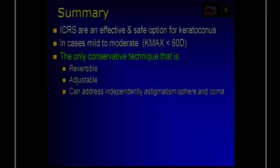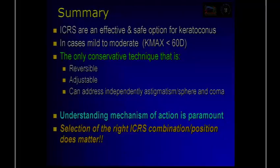In summary, and this is confirmed in the literature, ICRS are effective for keratoconus in cases that are mild to moderate. This is the only conservative technique that is truly reversible, adjustable, and that can address astigmatism, sphere, and coma independently. We have to understand the mechanism of action and bear in mind that the selection of the right ICRS combination and position is paramount.